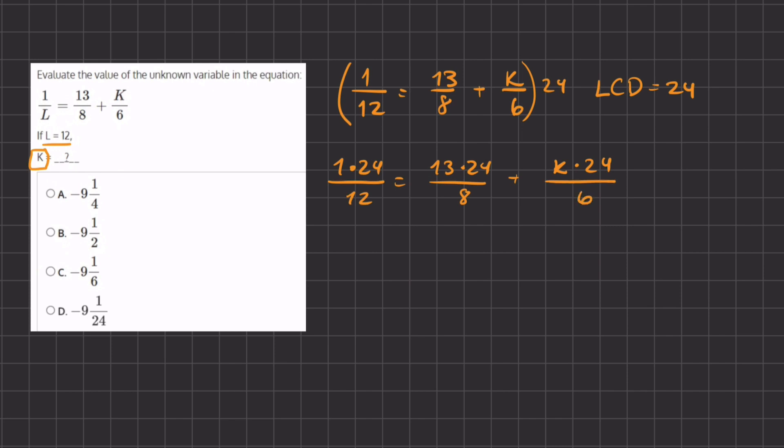Now let's simplify. We can simplify this 12 and 24 to 2 on the numerator. So we have 2 equals 13 times 24 divided by 8. We can also simplify this 8 and 24 and have this be a 3. So 3 times 13 gives us 39.